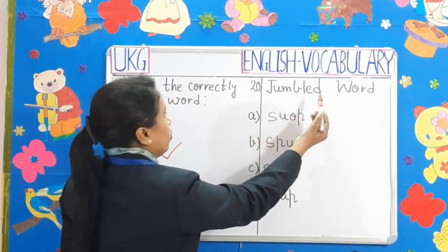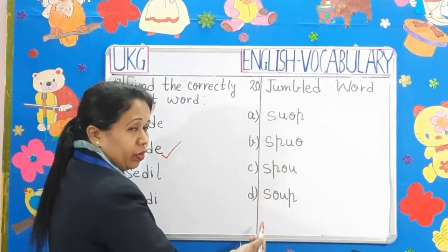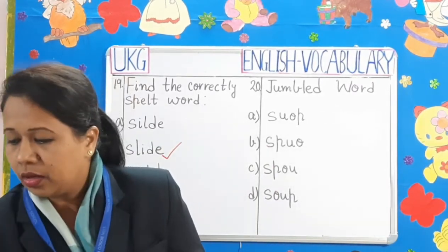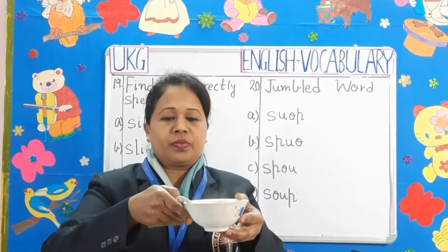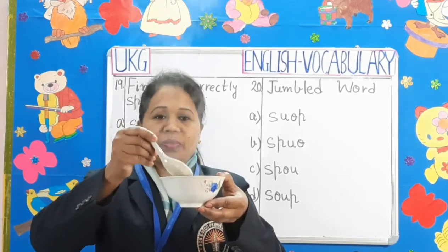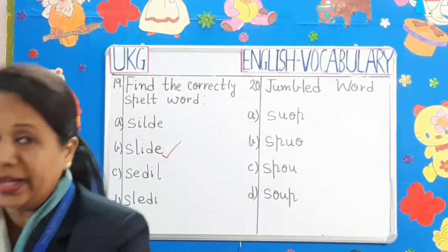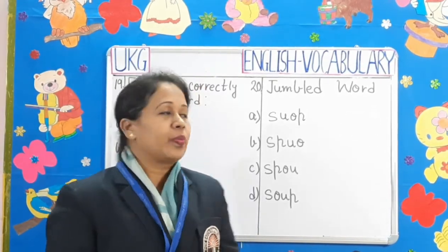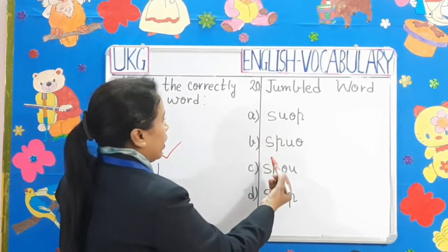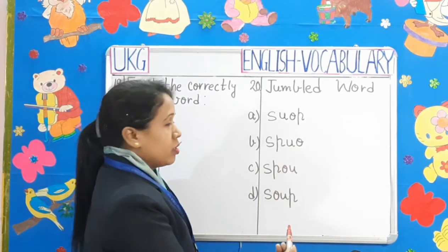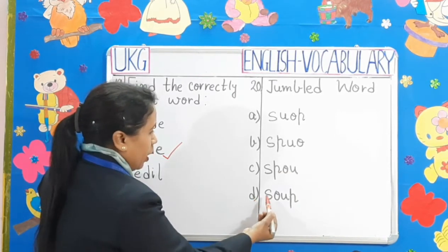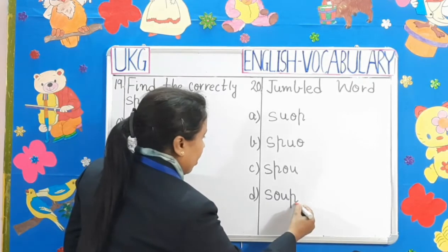Question number 20: Jumbled words. Four options are given. You have to select the correct spelling. Children, can you tell me what is it? Yes, it is a bowl of soup. Now, let's select the correct spelling of soup. Should it be S-U-O-P? No. Should it be S-P-U-A? No. Should it be S-P-O-U? No. Should it be S-O-U-P? Yes. This is the correct answer.